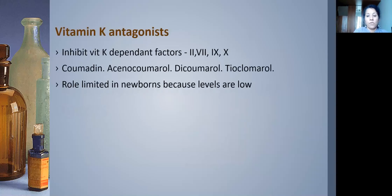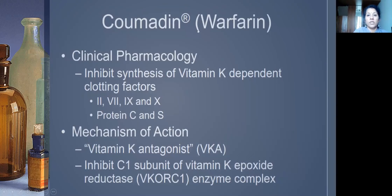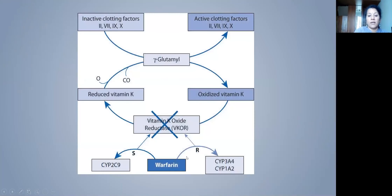Moving to anticoagulants and antiplatelet agents: the first class is vitamin K antagonists (VKAs), which inhibit vitamin K-dependent clotting factors 2, 7, 9, and 10. In newborns, levels of these coagulation factors are lower. The most commonly used VKA is warfarin (coumadin). Warfarin inhibits the synthesis of vitamin K-dependent factors by antagonizing vitamin K — more precisely, it inhibits the subunit of vitamin K epoxide reductase complex (VKORC1).